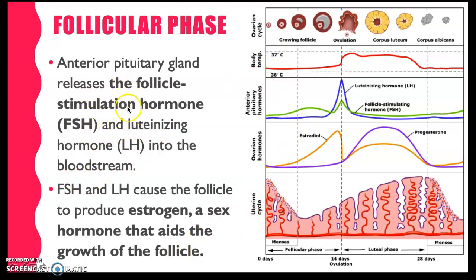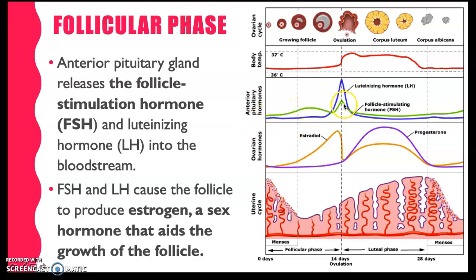During this stage, it's not only FSH that is being produced by the anterior pituitary, but also LH. However, there are higher concentrations of FSH, which stimulates the ovary — particularly the follicular cells inside the ovary — to produce estrogen. If you look at the picture, we can see the follicle cells and also the egg cells before ovulation. The follicular phase happens from day 0 up to day 14. Looking at the anterior pituitary hormones, the blue one is the luteinizing hormone and the green one is the follicle-stimulating hormone, which is somewhat higher in level compared to the luteinizing hormone.